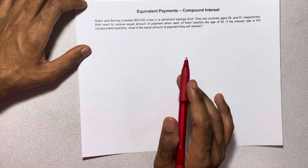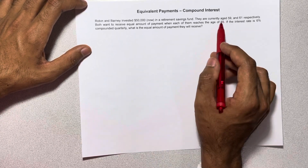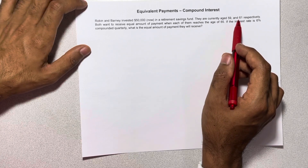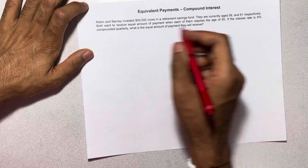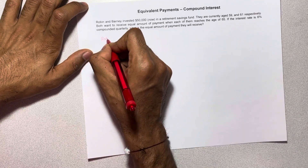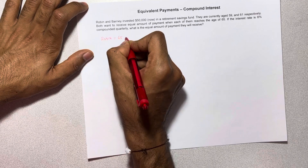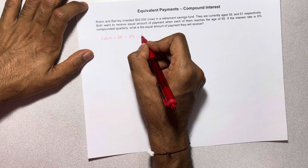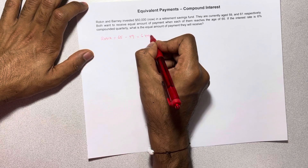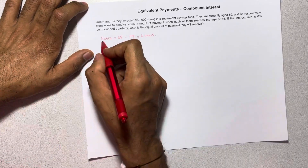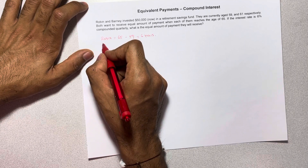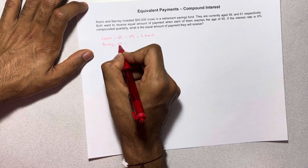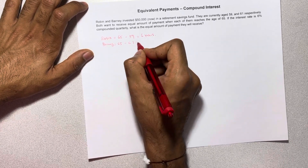Before we begin, we need to calculate how many more years Robin and Barney have until they retire. Robin wants to retire at 65 and she is currently 59 years old, so she has six more years until she retires. Barney wants to retire at 65 but he is 61 years old, so he has four years until he retires.